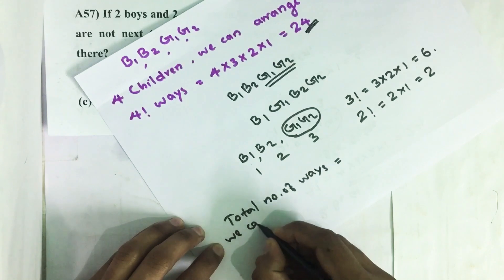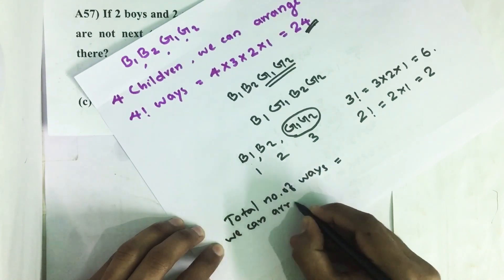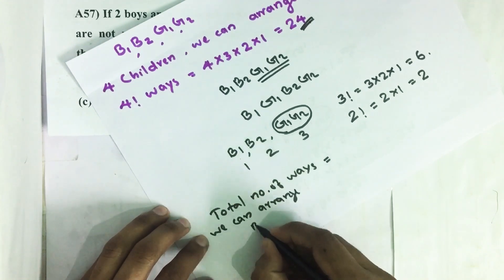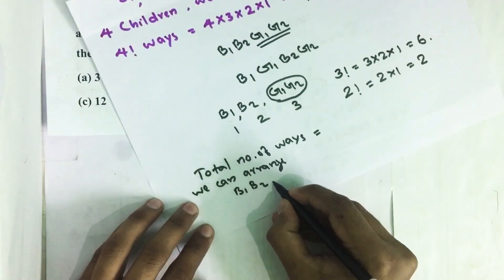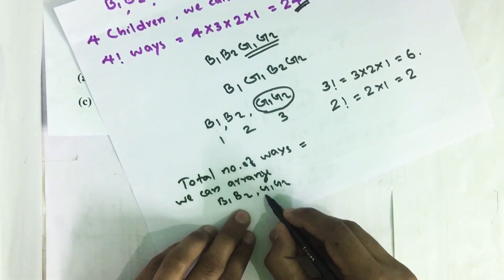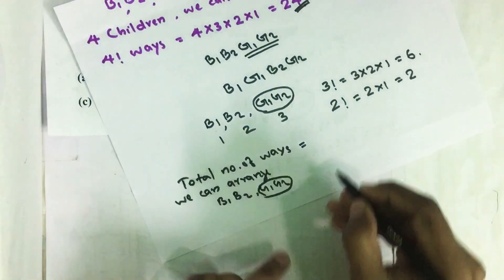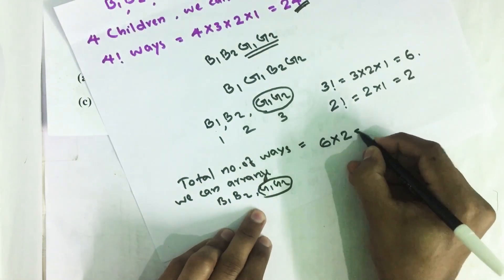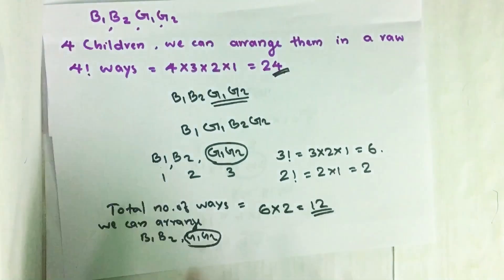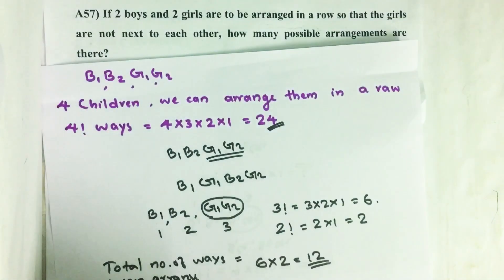Total number of ways we can arrange B1, B2, G1, G2 so that G1, G2 together equal to 6 times 2, which is 12. There are 12.